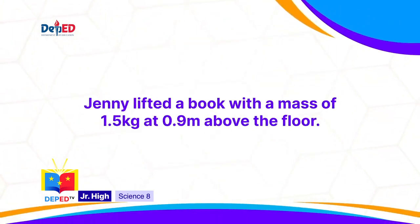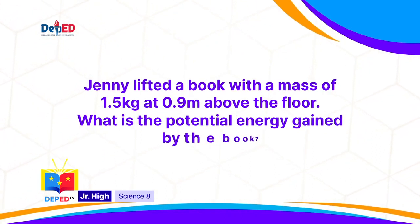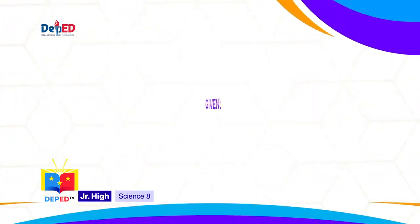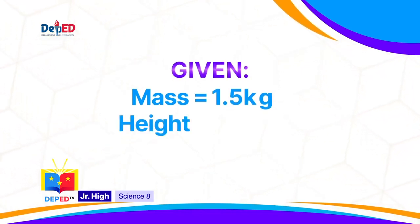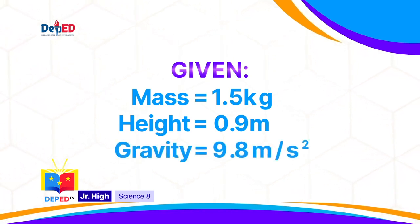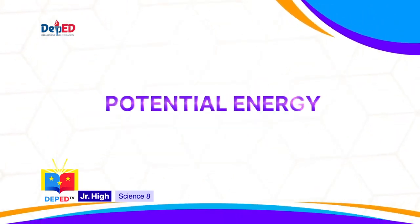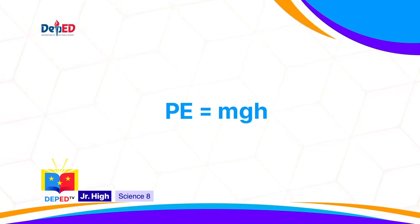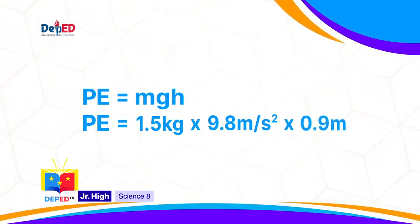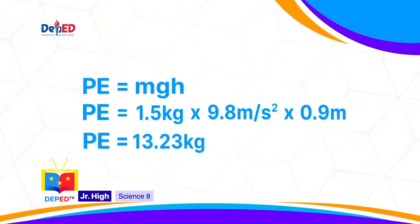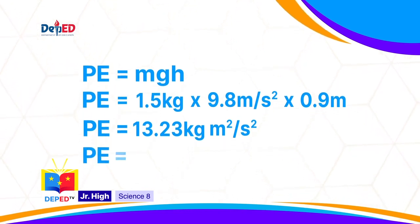Let's try this problem. Jenny lifted a book with a mass of 1.5 kilograms at 0.9 meter above the floor. What is the potential energy gained by the book? Given: mass = 1.5 kg, height = 0.9 m, g = 9.8 m/s². Using PE = mgh: PE = 1.5 × 9.8 × 0.9 = 13.23 kg·m²/s², which is also 13.23 joules. Easy, right?